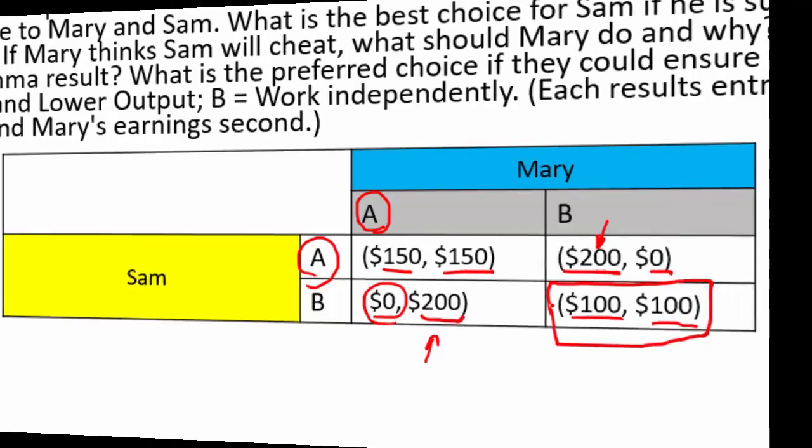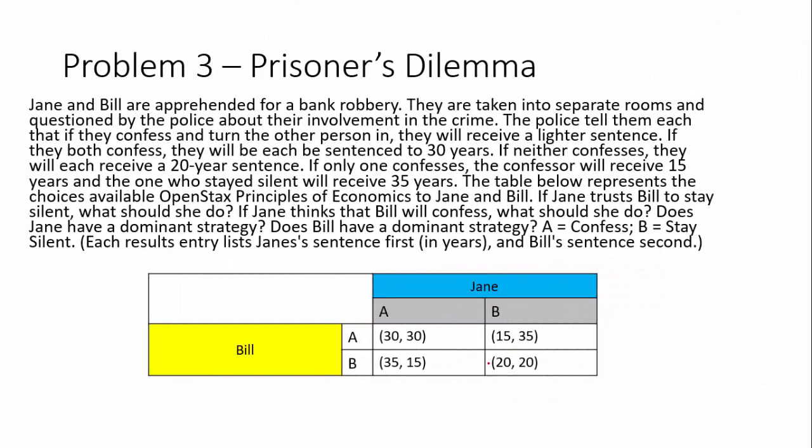Now let's work through the actual prisoner's dilemma scenario with Jane and Bill. They're apprehended for a bank robbery and taken into separate rooms and questioned by police. The police tell them each that if they confess and turn in the other person they'll receive a lighter sentence. If both confess, they each get 30 years. If neither confesses, they receive 20 years. If only one confesses, the confessor gets 15 years and the one who stayed silent gets 35 years.